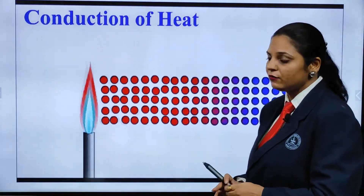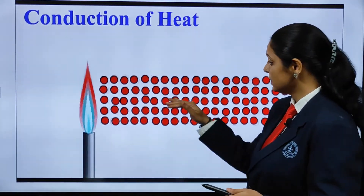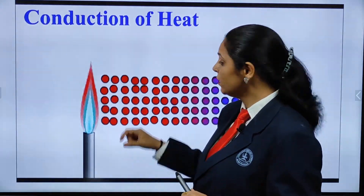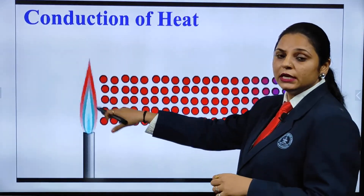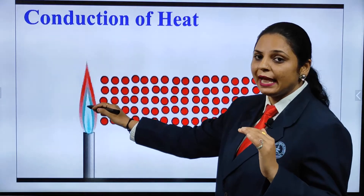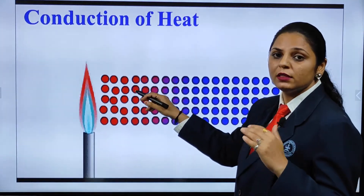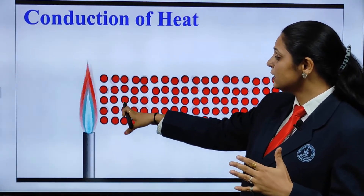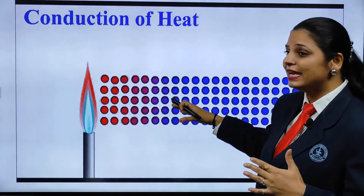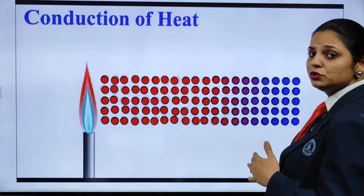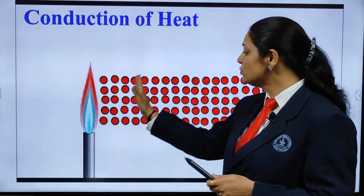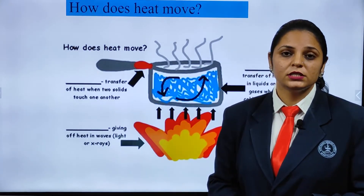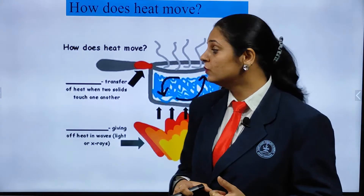When a candle is lit, the object is initially cold. When it gets contact with the heat, the molecules near the burning candle start moving at a faster rate. Slowly the vibration increases and passes on to adjacent molecules, and so on to the other end. This end becomes hotter and slowly the hotness is transferred to the other end as well. This is how heat moves through conduction.